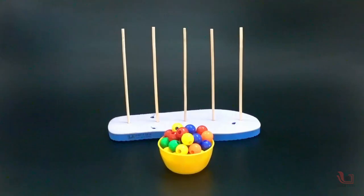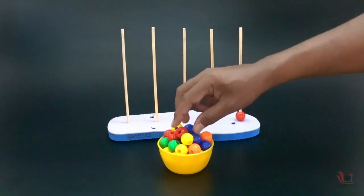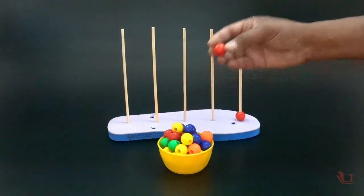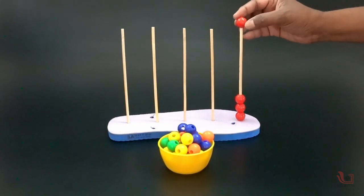Now, insert the beads into the leftmost wooden stick. One bead represents the value 1, the second bead represents the value 2, and the third bead represents the value 3, and so on.